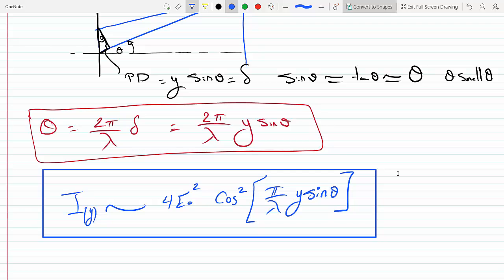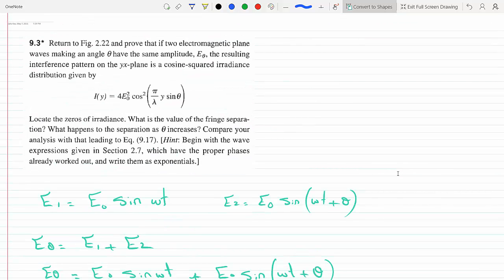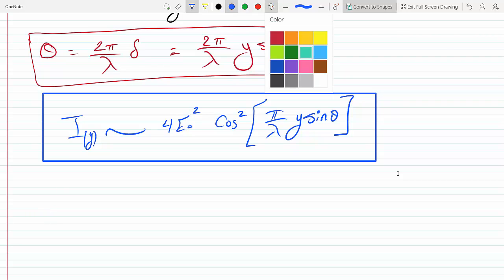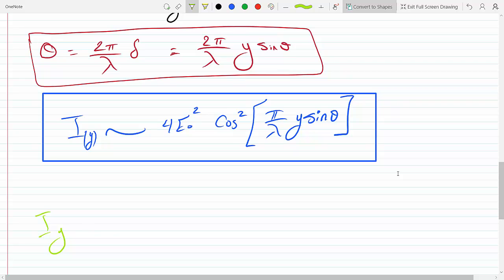And then it says locate the zeros of the irradiance. That is simply when the cosine argument is a multiple of pi over two. So I of y will equal zero when pi over lambda y sine theta is pi over two or multiples of pi over two. So that's 2n plus 1 odd multiples of pi over two.